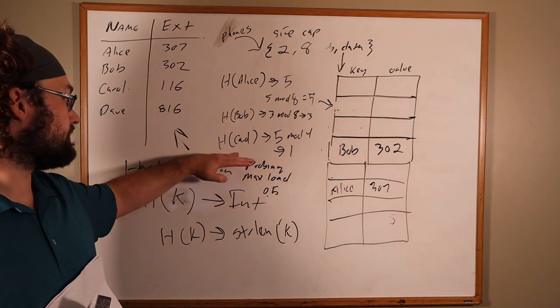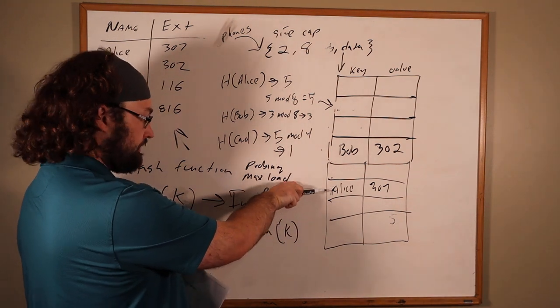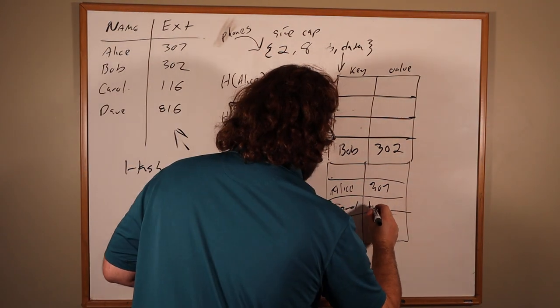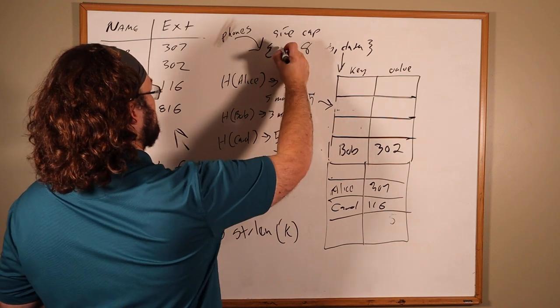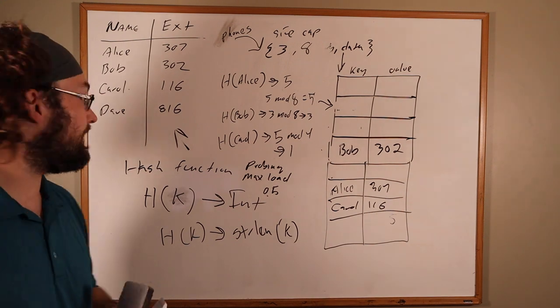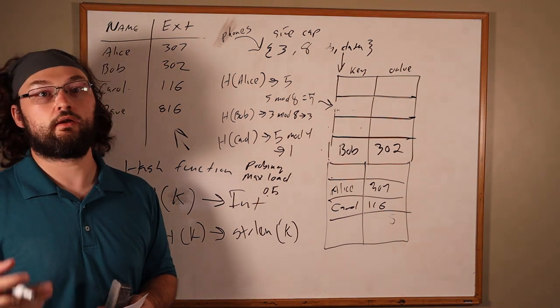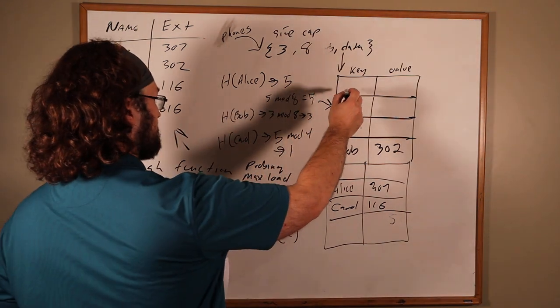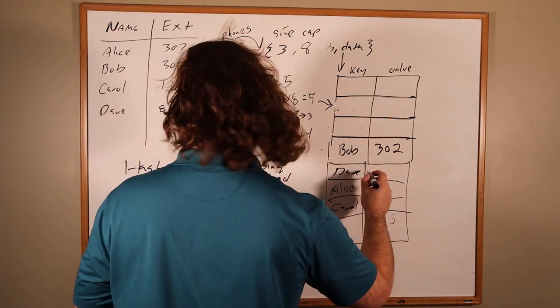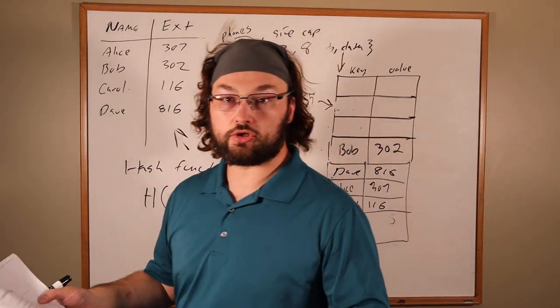Now that we've grown our table, we can do this insertion of Carol. Carol goes in the Alice slot, but she doesn't fit there, so we probe forward one. Carol is extension 116. Size is 3, capacity is 8, that's less than half. So we can insert Dave. Hash of Dave is 4, 4 mod 8 is 4. So Dave goes in slot 4. Dave, 816. So that's the mechanic of insertions into a hash table.